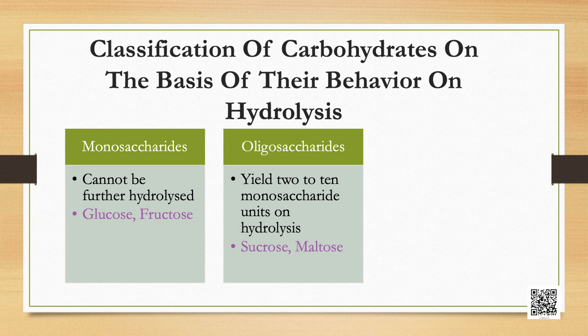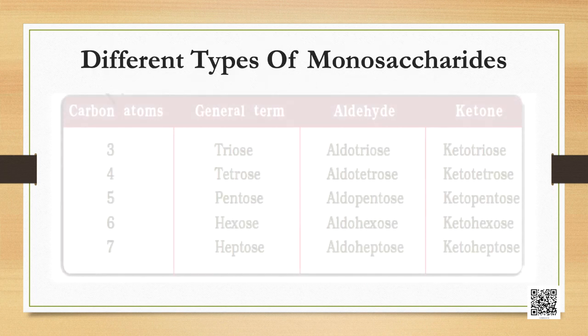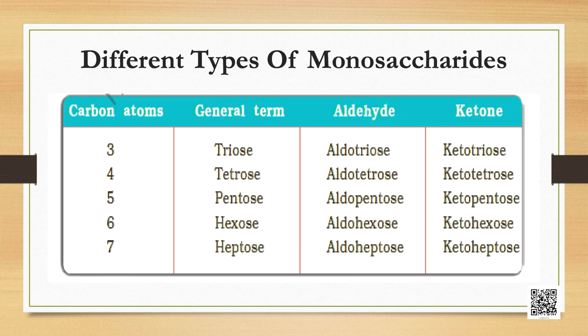Third, polysaccharides: carbohydrates which yield a large number of monosaccharide units on hydrolysis are called polysaccharides; examples are starch and cellulose. Monosaccharides are further classified on the basis of number of carbon atoms and the functional group present in them. If a monosaccharide contains an aldehyde group it is known as an aldose, and if it contains a keto group it is known as a ketose.